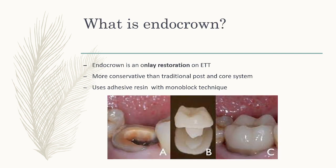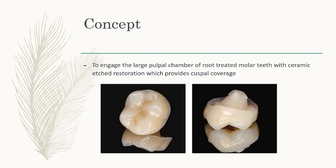So what is an endocrown? An endocrown is an onlay restoration on endo-treated teeth. It is more conservative than the traditional post and core system and uses adhesive resin with a monoblock technique. The concept is to engage the large pulp chamber of a root-treated molar tooth with a ceramic etched restoration, which provides cuspal coverage.